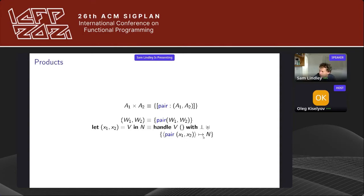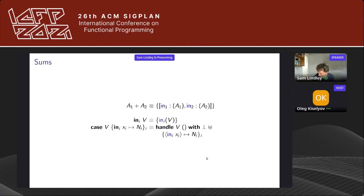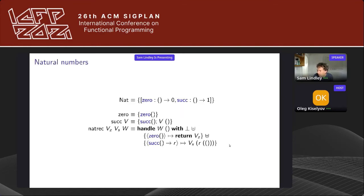Sums come almost for free from the operation structure — you have injection operations, and the elimination uses case with different clauses for each injection. More interestingly, we can do natural numbers. Because this is a deep handler it effectively builds in a form of fold or primitive recursion. The zero constructor is a zero-effect operation; because zero is the end of the data type we return zero there. The successor operation returns a unit.